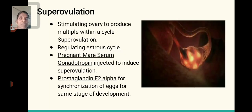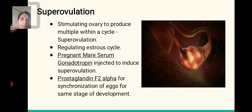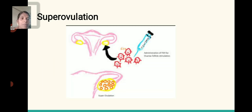Super ovulation means stimulating the ovary to produce multiple oocytes. Super ovulation regulates the estrous cycle. Pregnant mare serum gonadotropins are injected to induce super ovulation. Prostaglandin F2-alpha is injected to bring eggs to the same stage of development. As shown in this diagram, hormones are injected over multiple cycles to produce multiple cells.